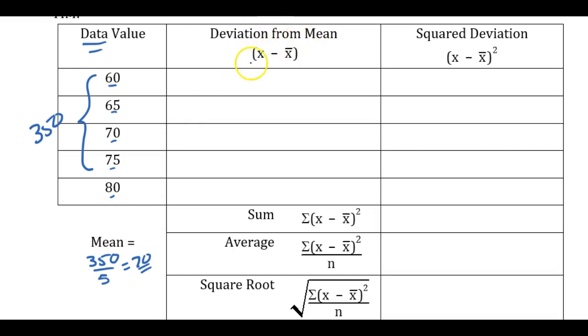Now, the deviation from the mean, this x subtract x bar. x just refers to a score. x bar is the mean itself. What you do here, you take each separate score, and you subtract it from the mean. So, 60 take away 70 is a negative 10. 65 take away 70, negative 5. 70 take away 70. So, in this case, this score is right on his mean. So, there's zero difference. 75 take away 70, you get 5 and 80 take away 70.